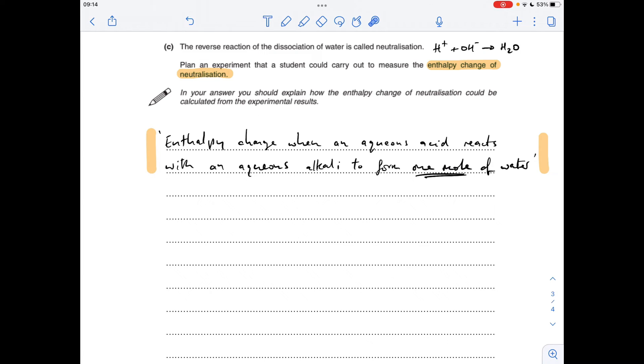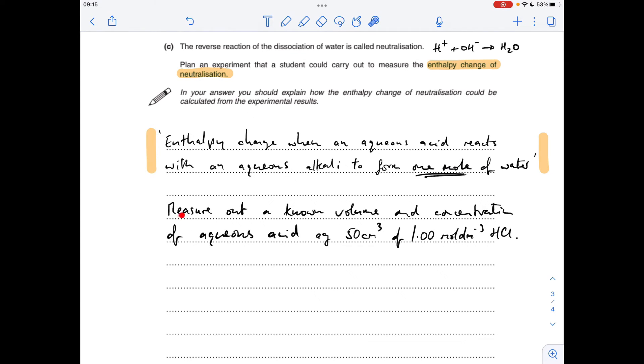So it's not straightforward. I think this will be quite feared by a lot of students. So I'll take you through it now. The first thing I'm saying is measure out a known volume and concentration of aqueous acid. And my example is 50 cm cubed of 1 mole per decimetre cubed HCl.